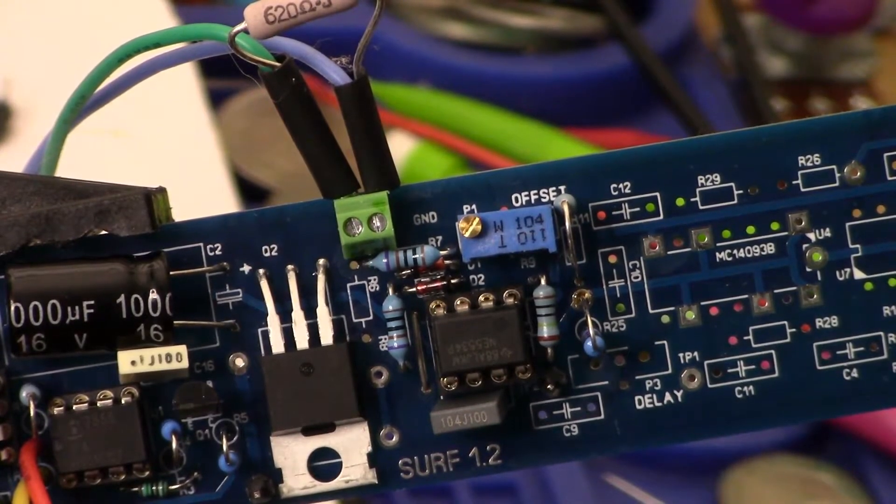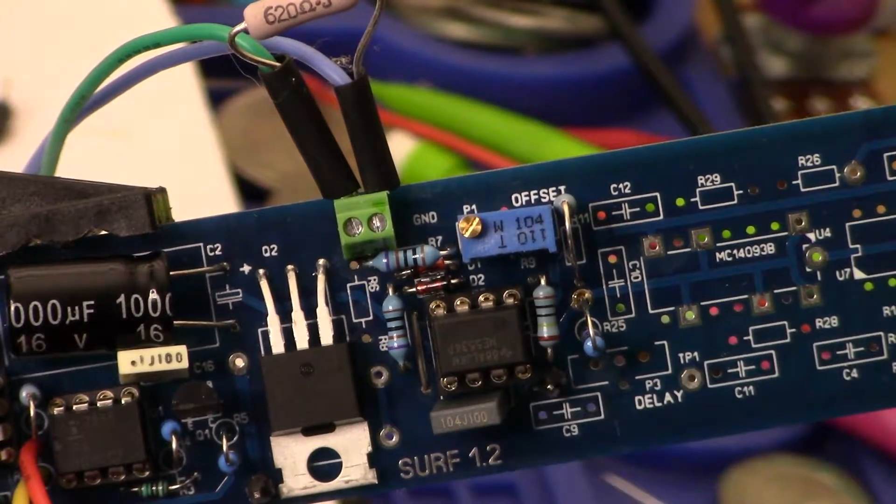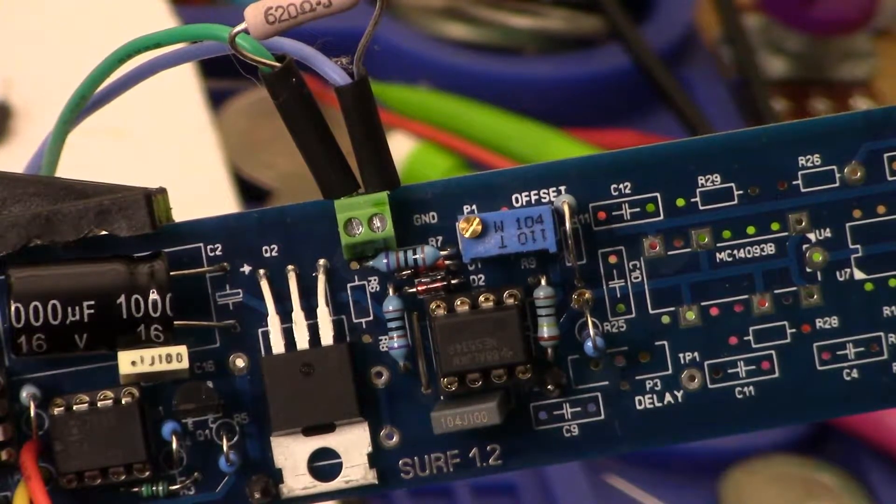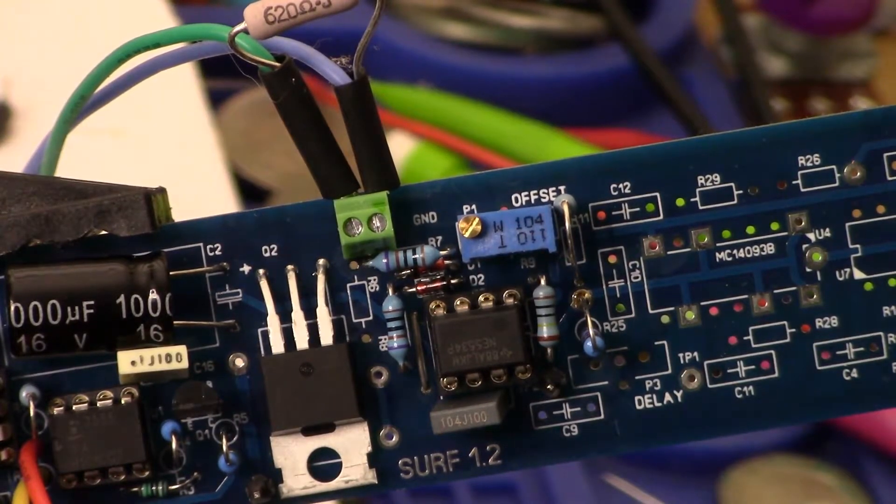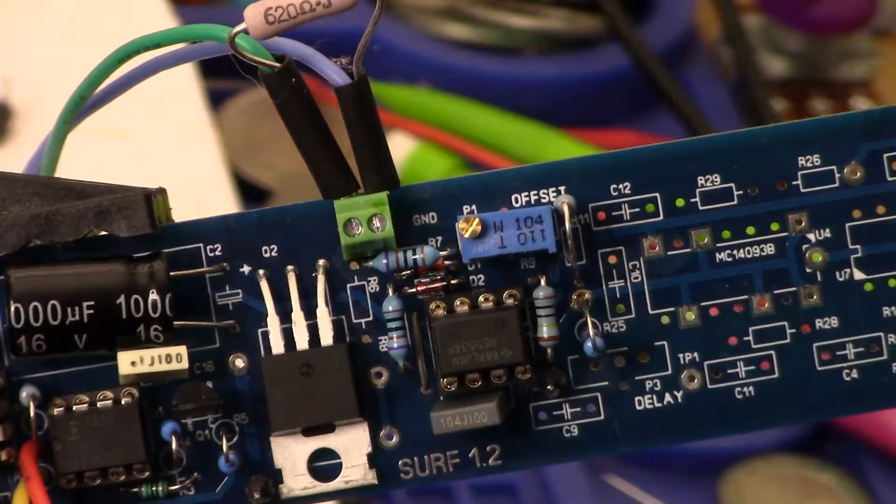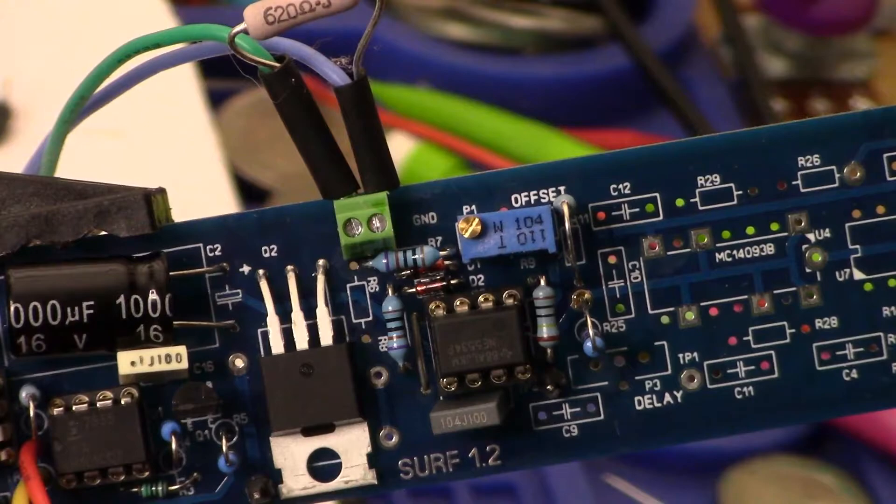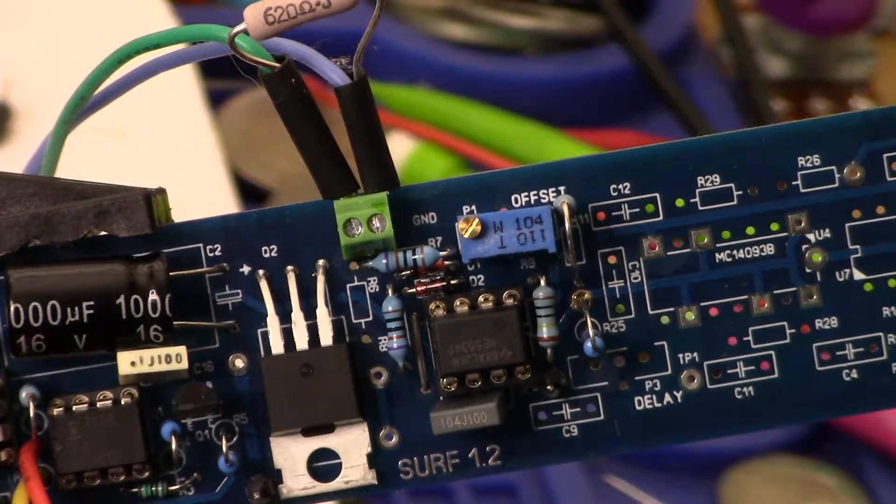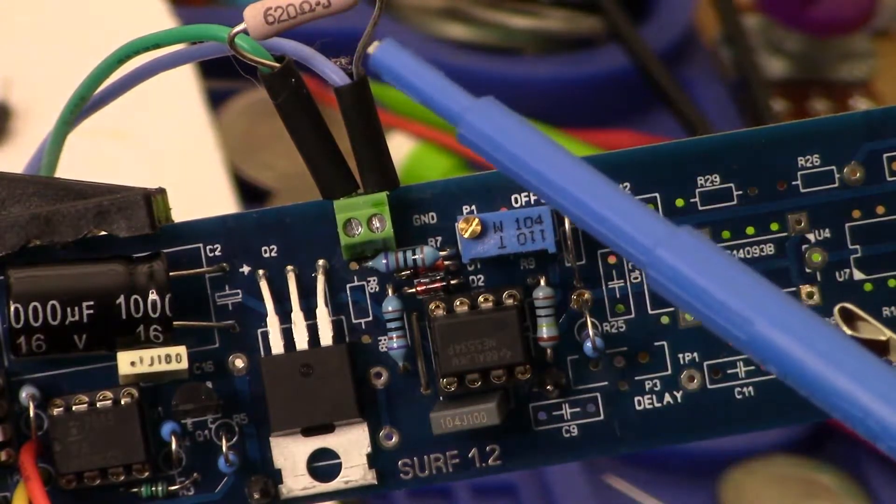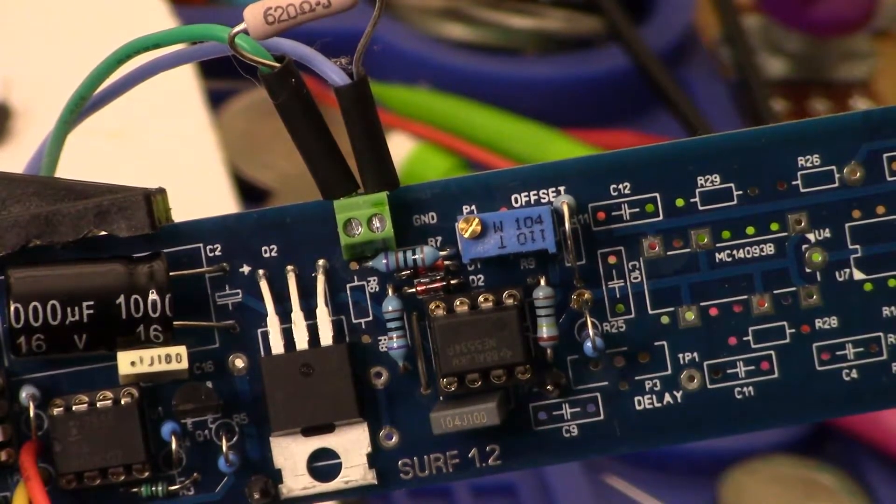The preamp is anchored by this op-amp here. It's an NE5533 or NE5534. We've got this offset trimmer pot here. I'll show you the workings of that and a couple diodes also up here. You can see I've got my coil installed and this I have right here is the damping resistor I have in circuit at the moment.